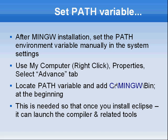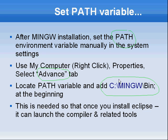Once you do that, you have to set up the path variable manually. Right-click on My Computer, select Properties, and go to the Advanced tab to set the path variable. Add C:\MingW\bin into the path variable — whichever directory you have installed MingW in, add that path with \bin. This is needed so that the next tool you install can automatically launch the MingW compiler.